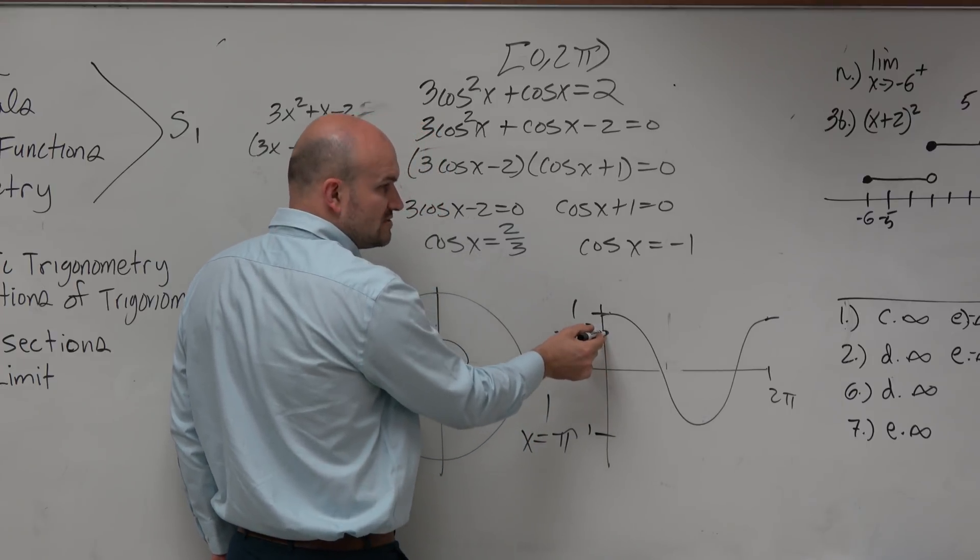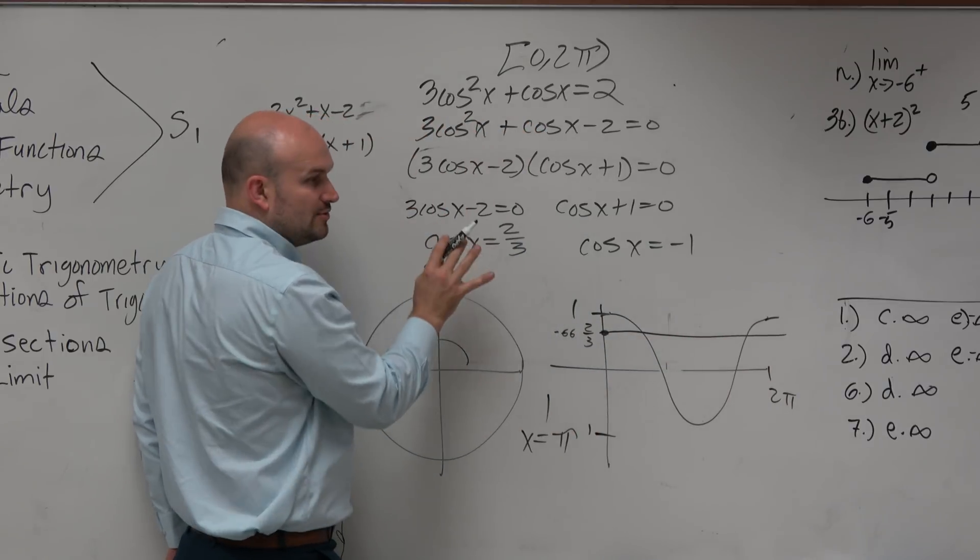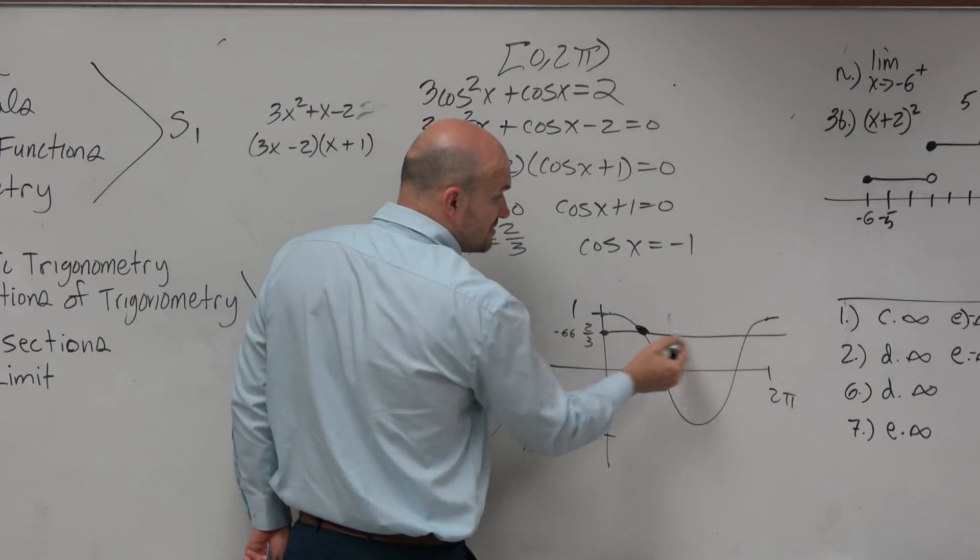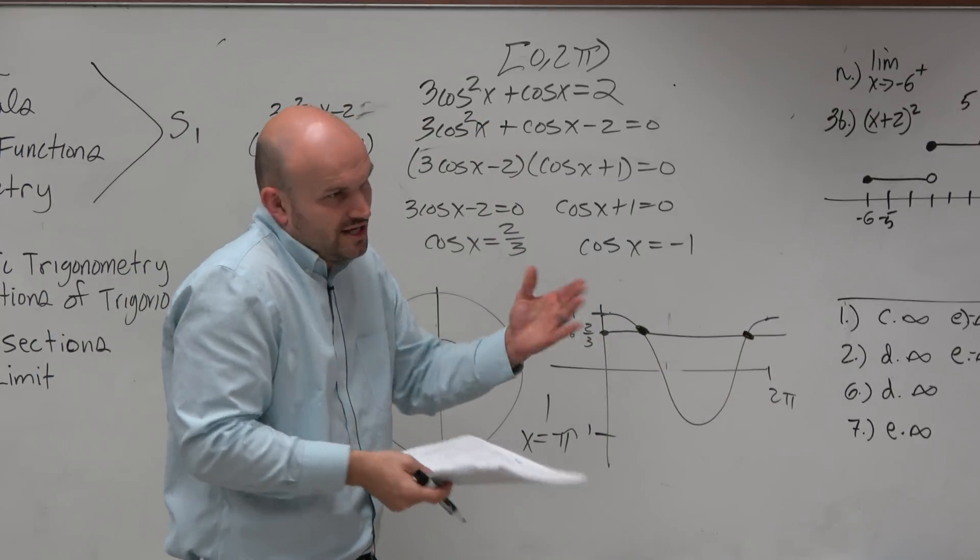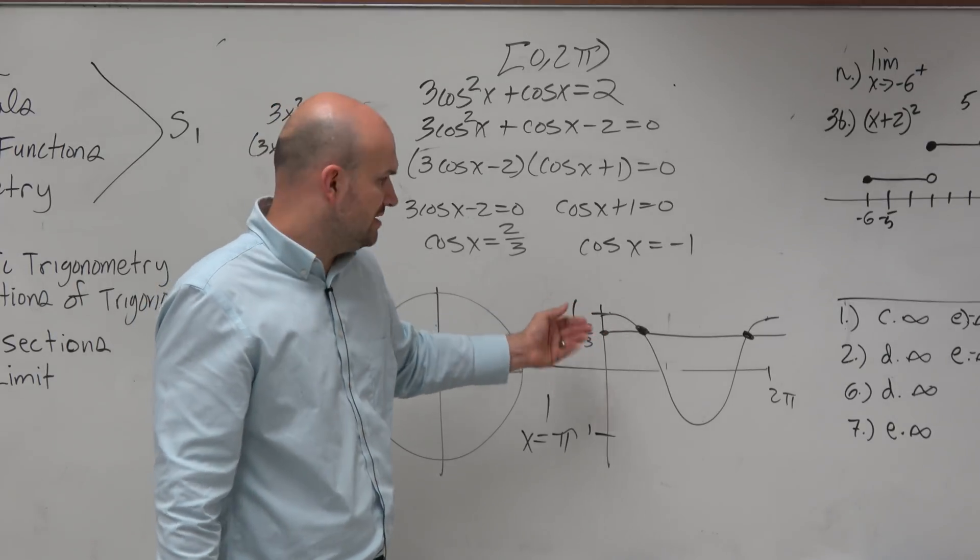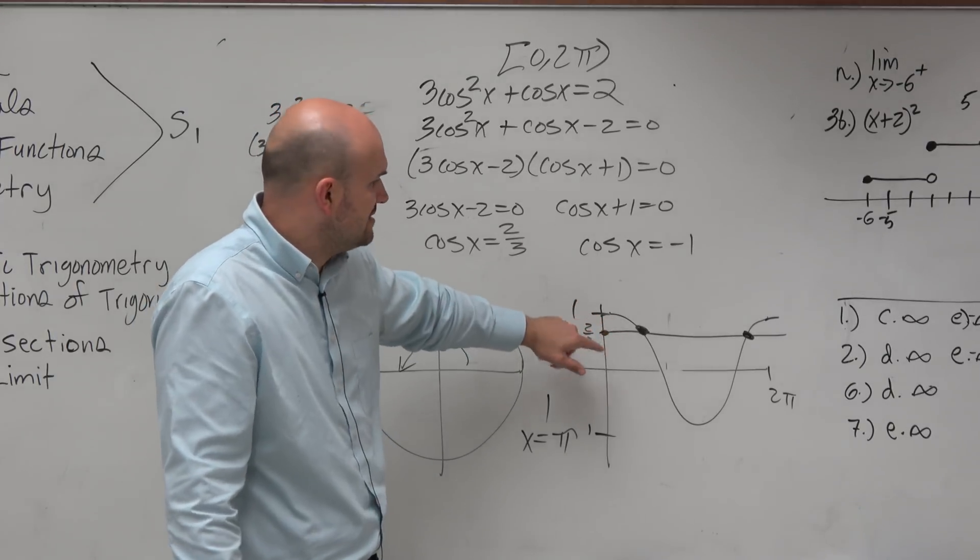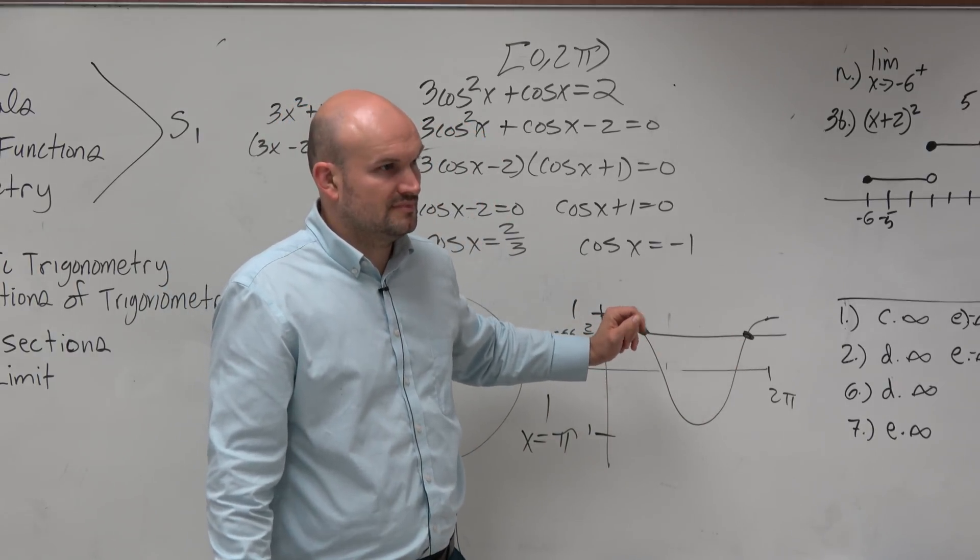So how many times does the cosine graph cross 2 thirds within a period? Twice. Right? So even though we don't, even though without a calculator, now could you type in the calculator to figure out the answer? Sure, you could. Right? But we don't even have to waste our time doing that. Because we can see that it crosses there twice, right?